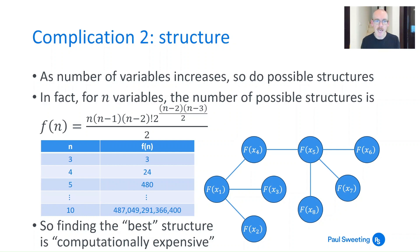And this formula here tells you what the number of possible structures is. But as you can see when you go to four variables you actually have 24 different potential structures of a vine copula. Five you go to 480. If you go to 10 you've got 487 trillion, 49 billion, 291 million, 366,400 potential structures which is quite a few.